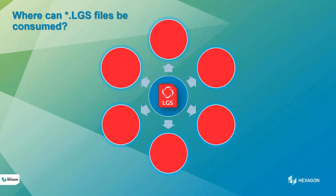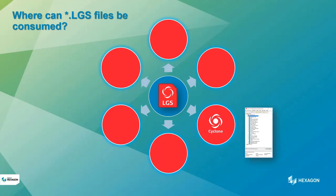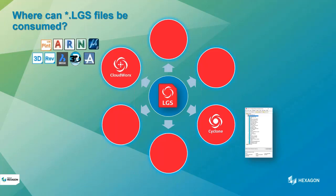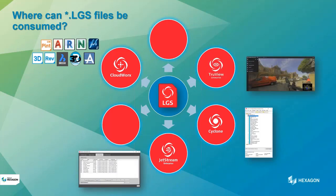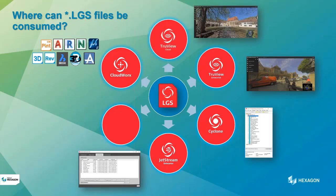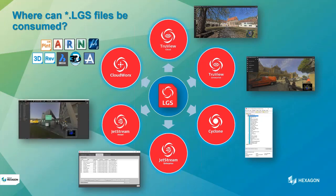An LGS file can be consumed in a number of places. You can read an LGS file back into Cyclone — useful for moving data quickly across different continents or offices. You can open an LGS file in various software packages with Cloudworks support, load it to Jetstream Enterprise, TrueView Enterprise, or TrueView Cloud, which will take all the panoramic imagery, measurement information, and asset information. You can also open it in the free-of-charge Jetstream Viewer.